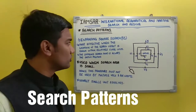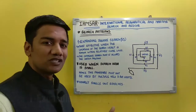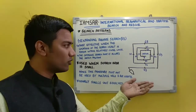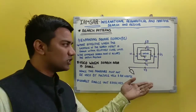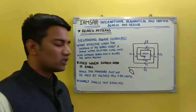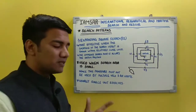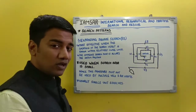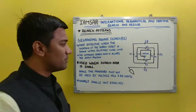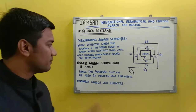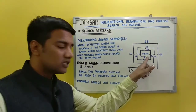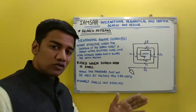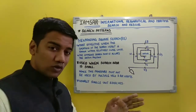Let's look into the search patterns. First and foremost is the expanding square search. As you can see in the diagram, this is how it looks. This pattern is most effective when the location of the search object is known and is within relatively close limits. The commencement of the search point is known as the datum. Your first leg of the search is into the wind in order to avoid navigational errors.